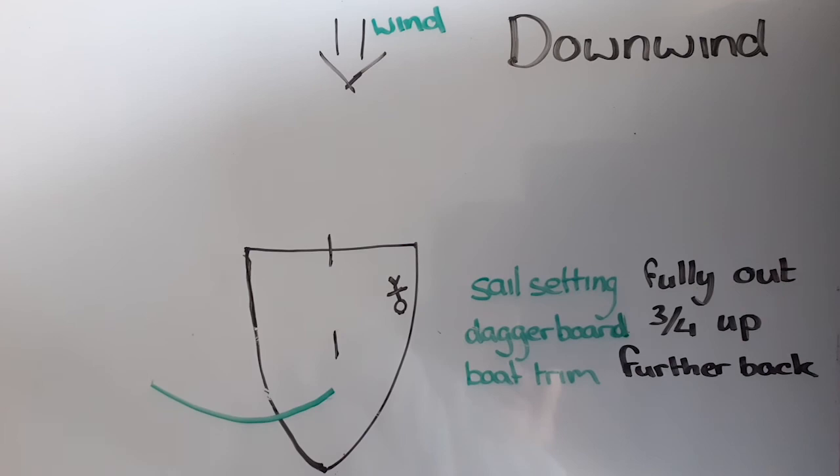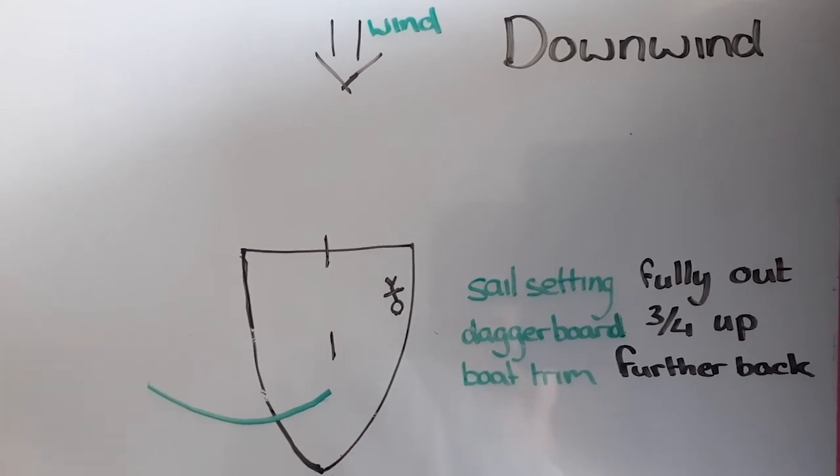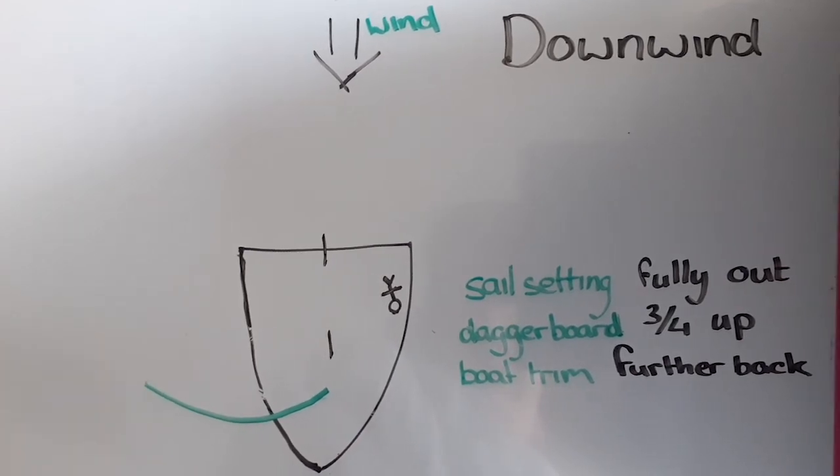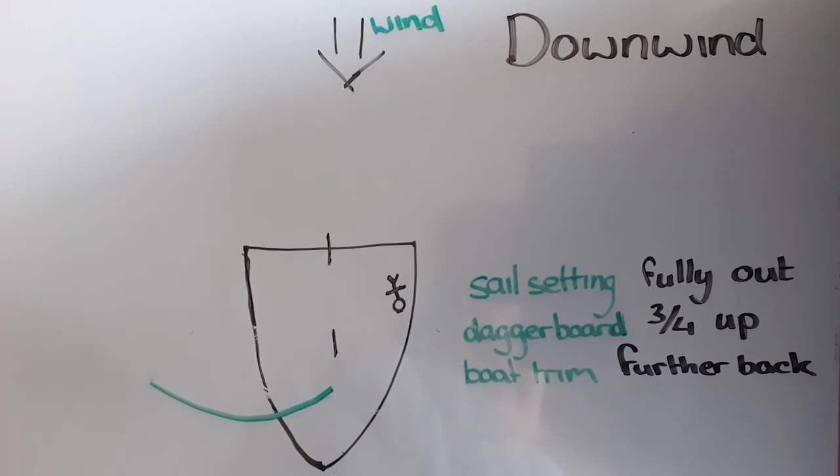The last point of sailing is downwind sailing. In this diagram, you can see the wind coming from the top of the board and the boat sailing directly away from it.